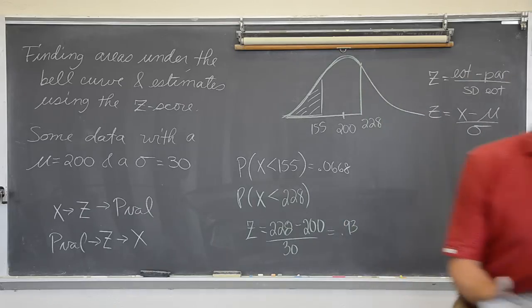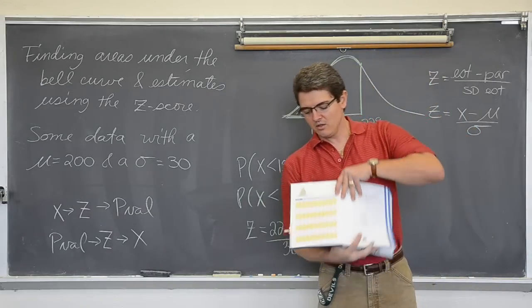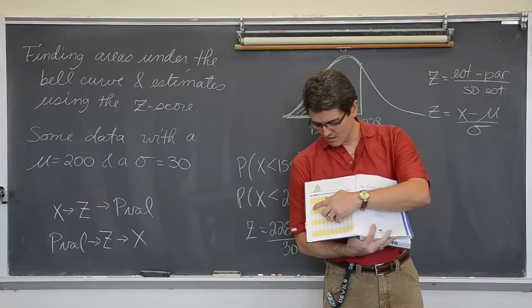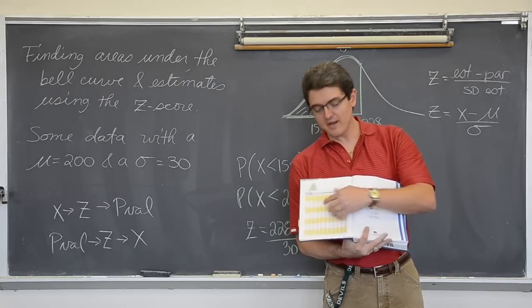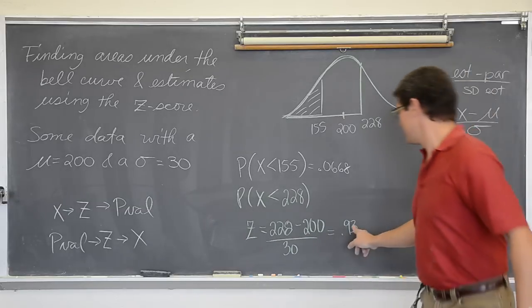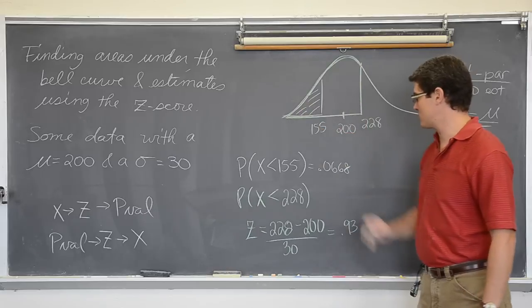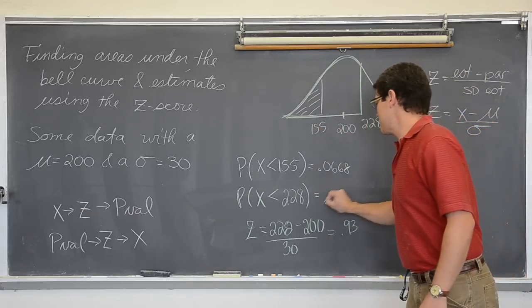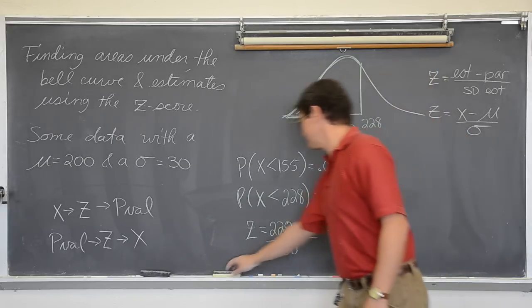And, on your z score chart, on the part that has the positive z's, you go down to 0.9 on the z column, go over to the 100's column of 3, and you will find your p value. The area to the left of this z score of 0.93, the area to the left of 228, is equal to 0.8238.